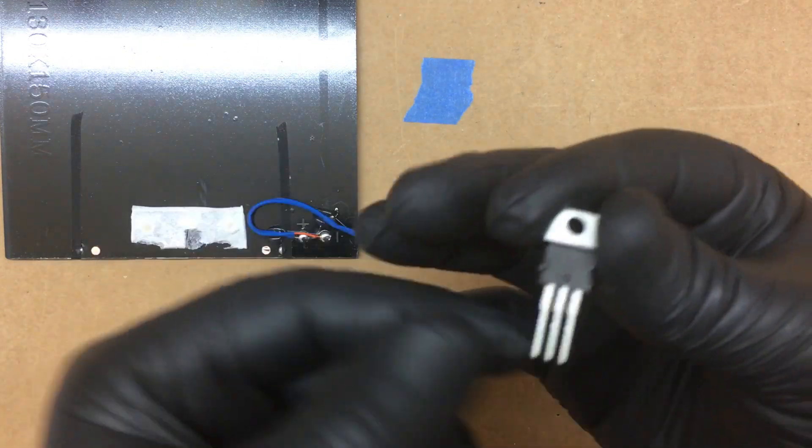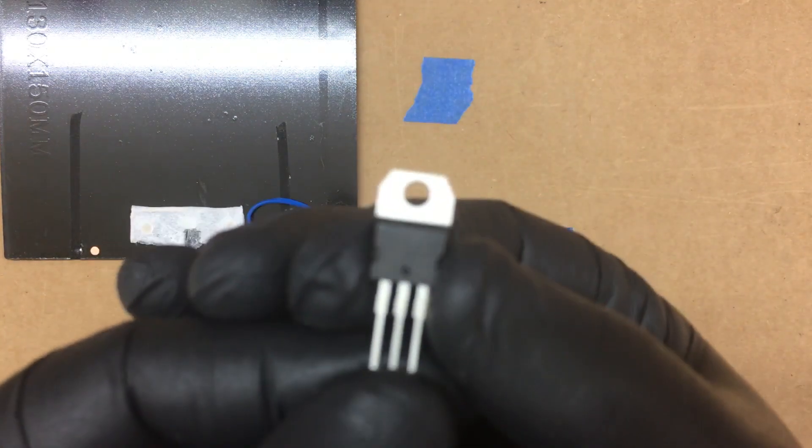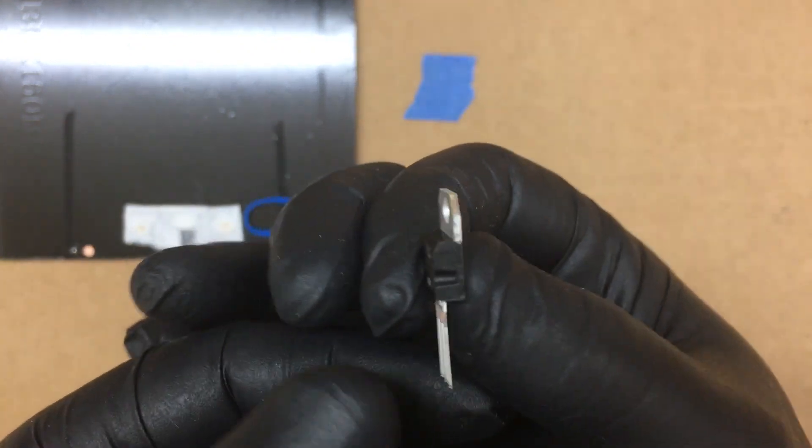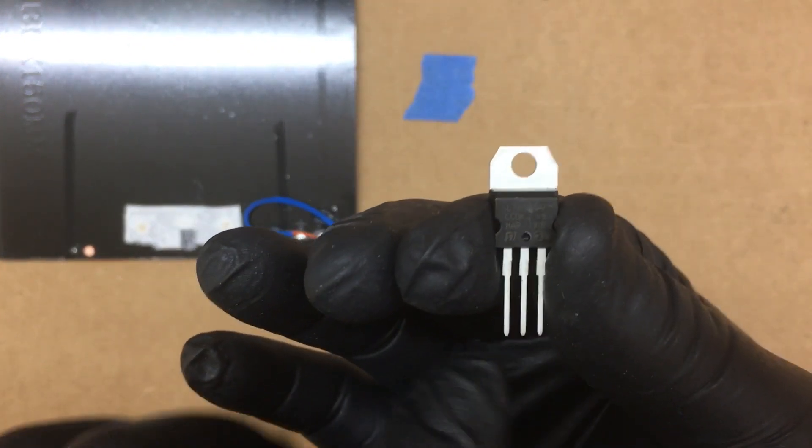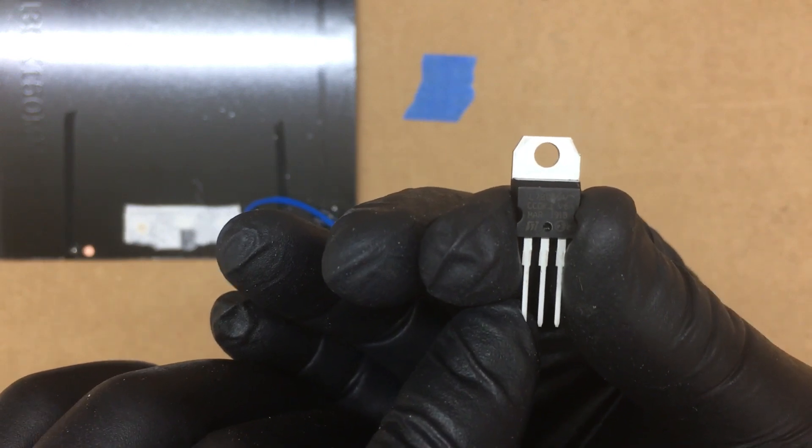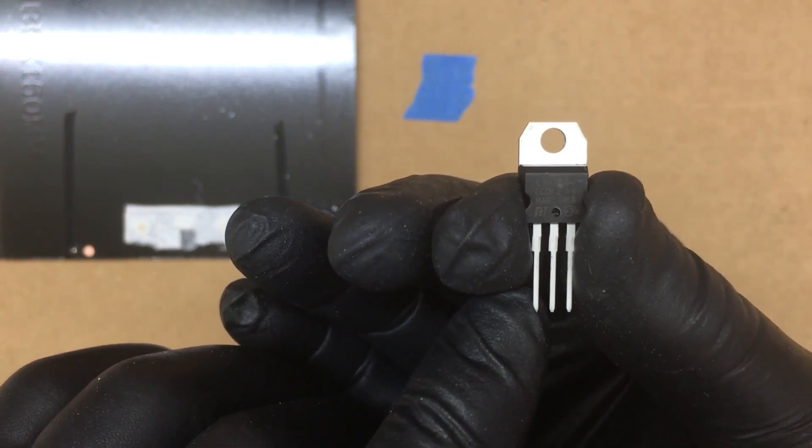When you're looking at the voltage regulator this way, as you can see, you got to make sure we're looking at it from the front. The printing here is on the front. This pin here on the left will hook up to the power coming from the solar panel.